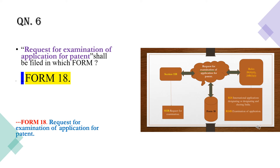Question number 6: Request for examination of application for patents will be filed in which form? The answer is form 18. The title for form number 18 is request for examination of application for patent. Here I have picked up the old slide — please take a look to see the established relationship between form number 18, section 11b, rule 20 and 24b.